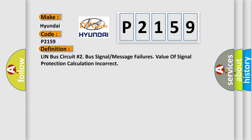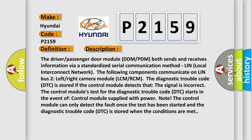The driver/passenger door module (DDM/PDM) both sends and receives information via a standardized serial communication method: LIN (Local Interconnect Network). The following components communicate on LIN bus 2: left/right camera module (LCM/RCM). The DTC is stored if the control module detects that the signal is incorrect. The test starts when the control module is supplied with power, and the DTC is stored once the fault conditions are met.